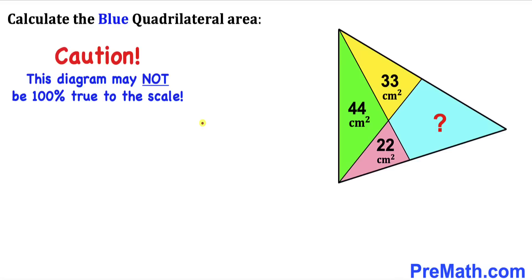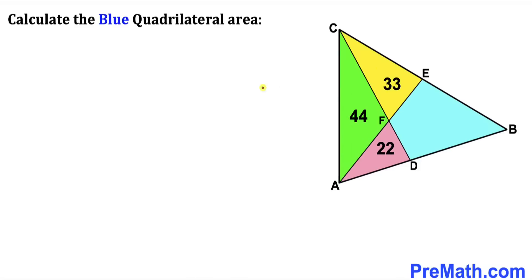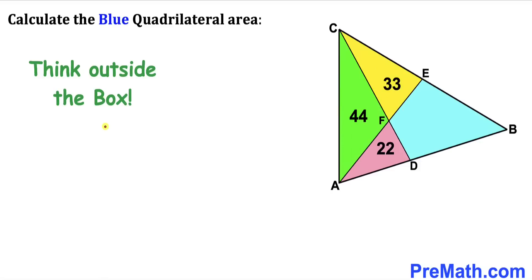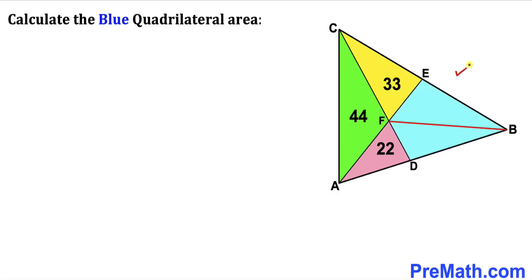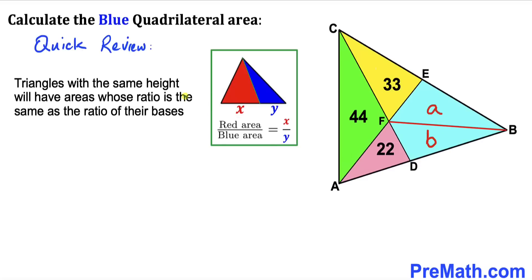Note that this figure may not be 100% true to scale. Since we are dealing with this challenging kind of problem, we are going to think outside the box. I am going to connect points B and F, giving us a much nicer looking diagram. Now we can see that the blue quadrilateral has been divided into two parts. Let's call the area of one triangle A and the area of the other triangle lowercase b. Now let's do a quick review that will help us solve this problem.